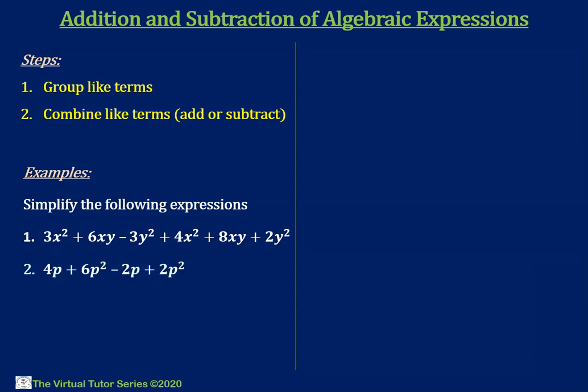Number 2: 4p plus 6p squared minus 4p plus 2p squared. Number 3: 5xy cubed plus 8x squared y cubed plus 2y cubed x.